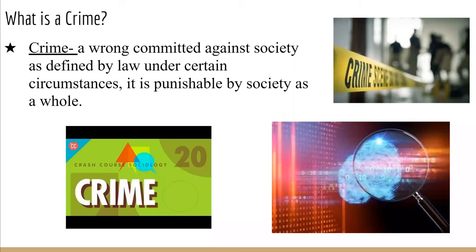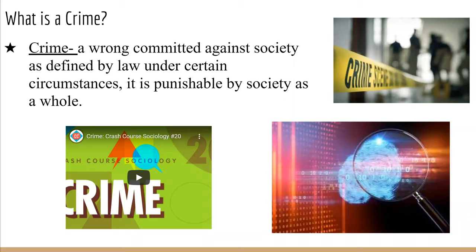Crime is a wrong committed against society. Now this might only affect one person, but by breaking the law or hurting someone within a society, you are breaking the social contract — the one we talk about with Locke, Hobbes, and Rousseau. A crime is a crime against society because you are not respecting the rules of civil engagement.